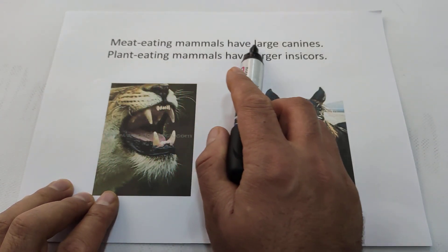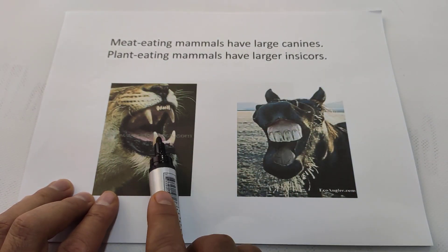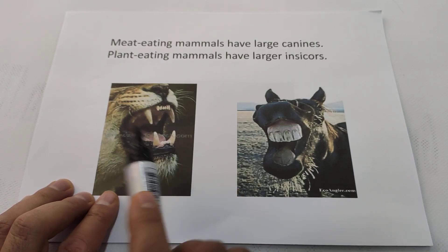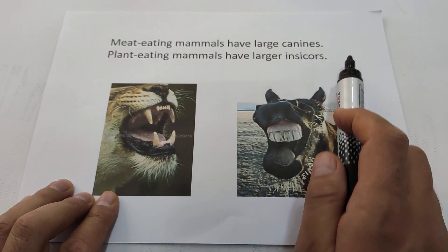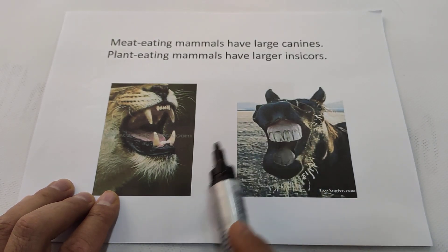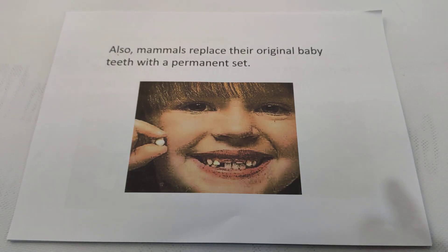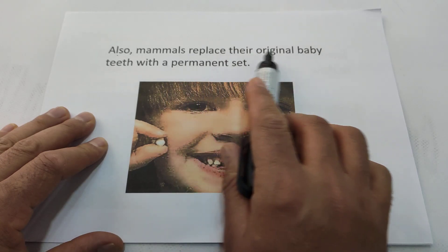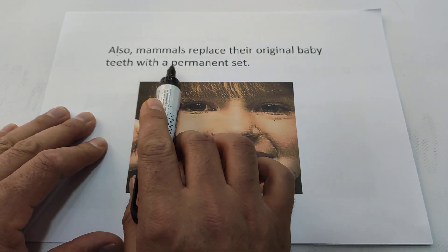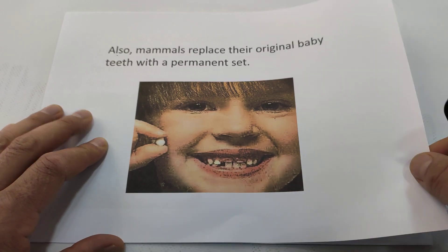Meat-eating mammals have large canine teeth — as you can see, the lion has large canines. Plant-eating mammals have larger incisors; for example, donkeys have larger incisors. Mammals also replace their original baby teeth with a permanent set.